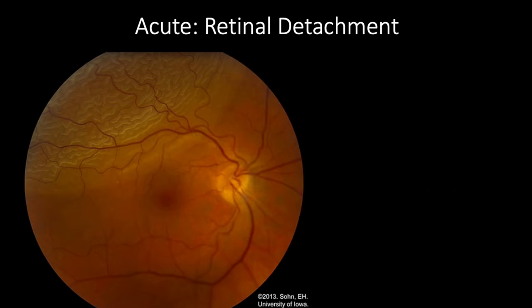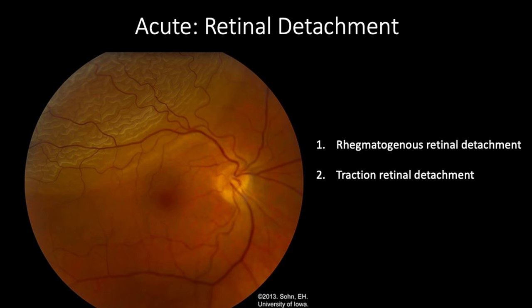The next acute pathology we're going to examine is a retinal detachment. Retinal detachments are sight-threatening conditions that occur when subretinal fluid accumulates between the neurosensory retina and the retinal pigment epithelium. There are typically three main ways this process occurs: a rhegmatogenous detachment, also known as a retinal tear, a tractional process, or an exudative process. The image on screen is a case of a rhegmatogenous retinal detachment; the detachment is lighter in color and crinkled upon itself like tissue paper.